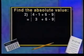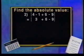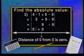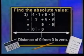For the second problem, simplify one step at a time. 4 minus 1 is 3. Then 3 plus 6 is 9. And finally, 9 minus 9 is 0. The absolute value of 0 is 0.